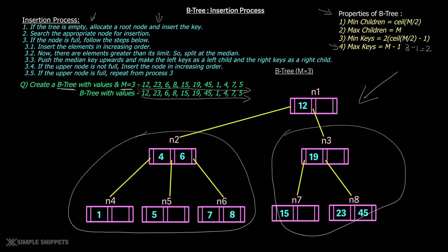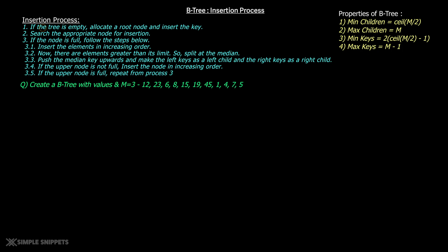We'll recreate this entire tree step by step using these insertion values. Step number one: if the tree is empty, allocate a root node and insert the key. So we start with the first key which is 12 — this is our very first node. The maximum number of keys per node is M minus 1, and M is 3, so max keys equals 2. Now let's take the second number, 23. Since there's one space in this node we'll insert 23 here. So 23 is inserted.